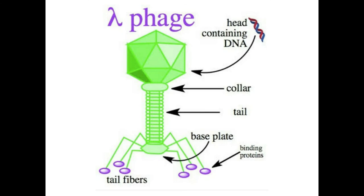Next, the phage vectors. Phages are viruses that infect bacterial cells and inject their genetic material into the host cell — this genetic material can be either RNA or DNA. They have a cloning limit which is higher than that of plasmids.